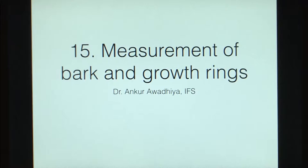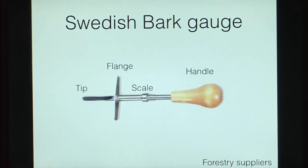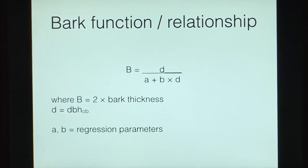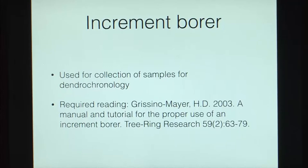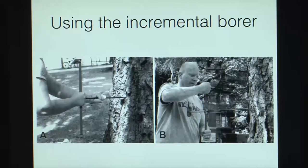Next, we looked at the measurement of bark and growth rings. Bark thickness is measured with a Swedish bark gauge or a bark probe, but there are limitations: they may penetrate into the sapwood, thus overestimating the bark, and quite a lot of skill and experience is required. We also looked at bark function and relationship compared to DBH and regression parameters. We also looked at an incremental borer that has three parts — auger, handle, and extractor — and is used to extract a sample from which rings can be measured for dendrochronology.